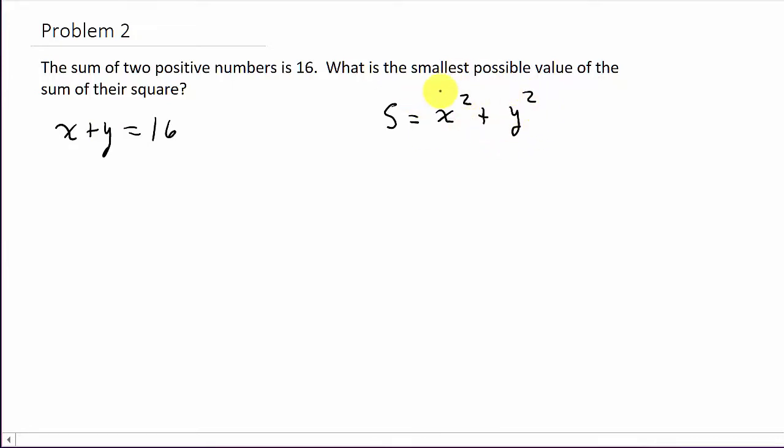So this is what we want to find the smallest possible value of. So I'm going to need to take the derivative of this. So let's get everything in terms of one variable. We'll get everything in terms of x. So that tells me here y is equal to 16 minus x.